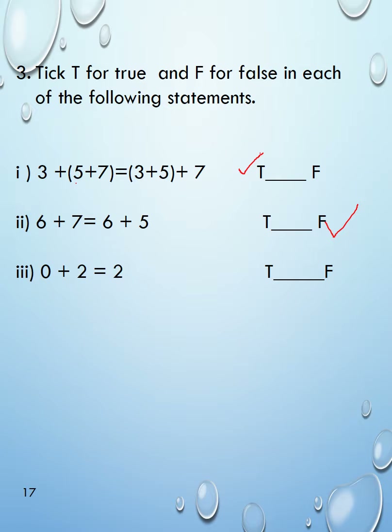Next: 0 plus 2 equals 2 — when you add zero with any number, the answer will be that same number. So 0 plus 2 equals 2 is true. You have to write T for true and F for false for each of the following statements. In this way you complete this exercise in your copies.